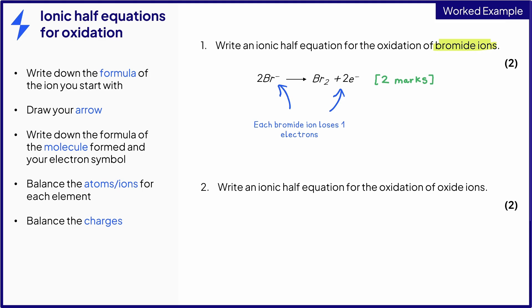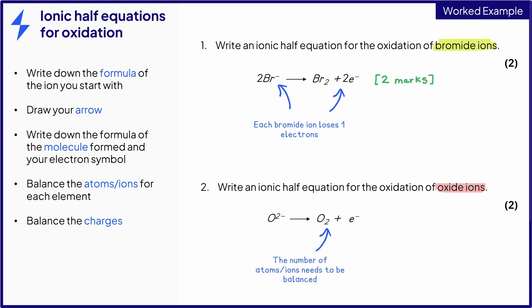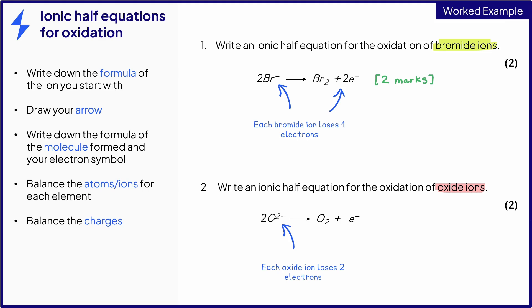For question 2, write an ionic half equation for the oxidation of oxide ions. Oxygen is in group 6 of the periodic table, so it forms ions with a 2− charge. The oxygen gas formed is diatomic with the formula O₂, and again the electrons being lost are shown on the right-hand side of the equation. This equation will score one mark. A common mistake students make is thinking that only two electrons are lost in total. However, you have two oxide ions each losing two electrons, so actually four electrons are lost in total, and it is a 4 that you need in front of your e⁻ to score the second mark. It's really important that you make sure the charges are balanced on each side of the equation.